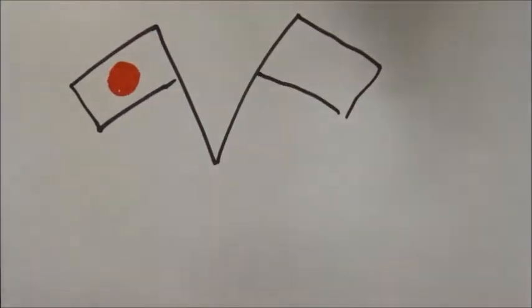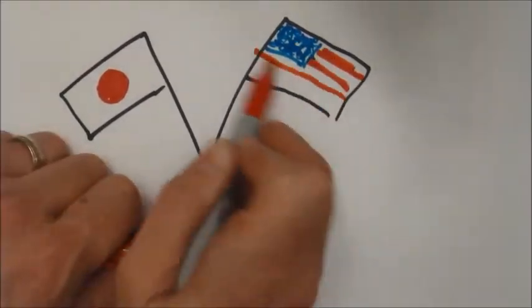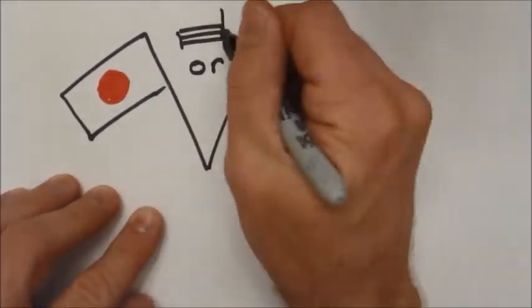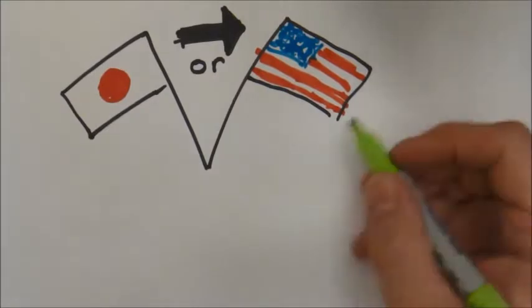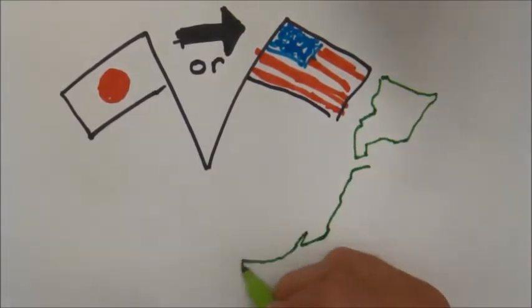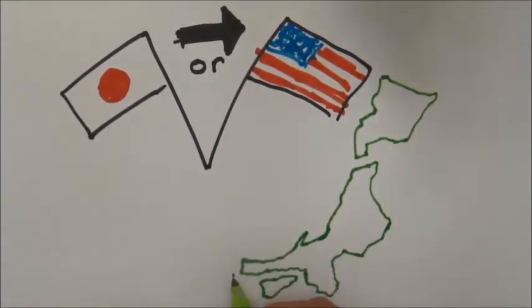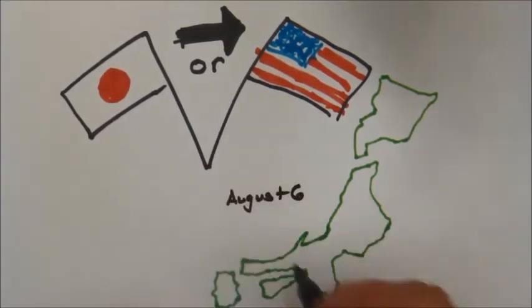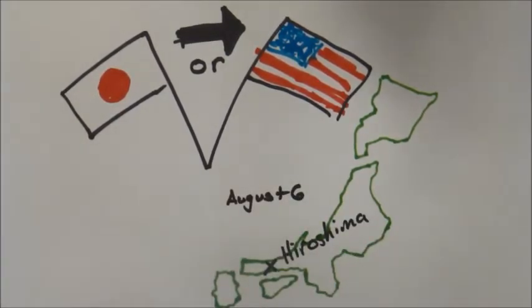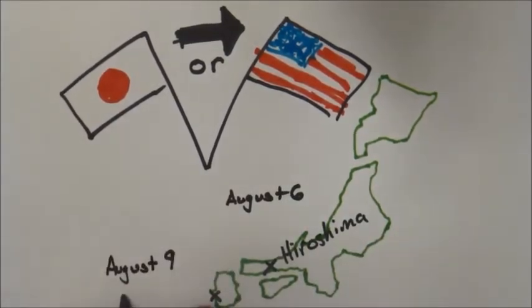So, the decision is, do we sacrifice the Japanese in order to save the United States in a war? And the decision is made, and on August 6th, 1945, the first atomic bomb is dropped in Hiroshima. Three days later, on August 9th, the second bomb is dropped in Nagasaki.